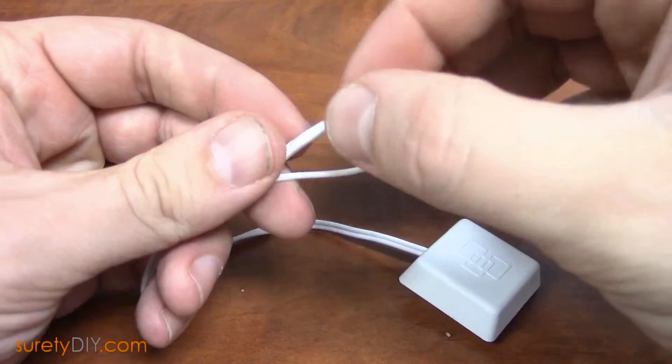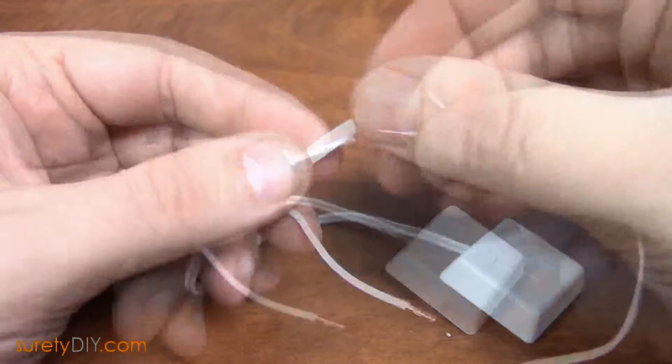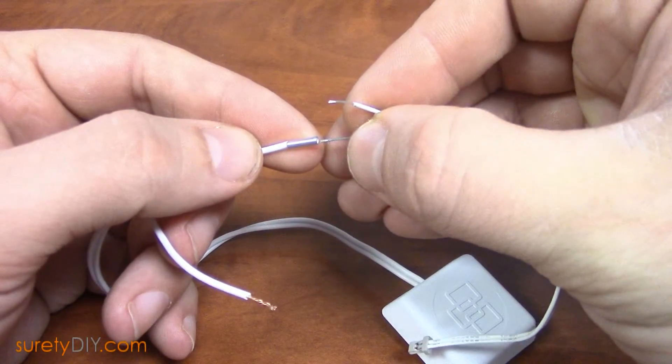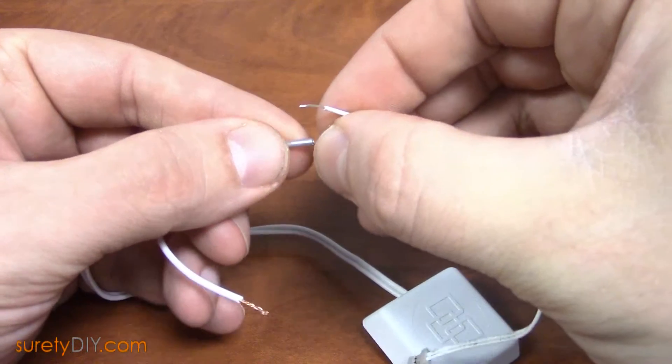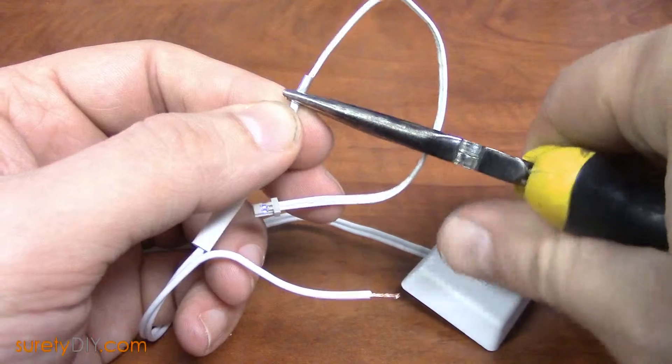Make sure to slide the heat shrink tubing on before splicing the wires together. Slide one wire from your DW10 lead and one from your shock sensor into the connector, then crimp with a pair of needle nose pliers.